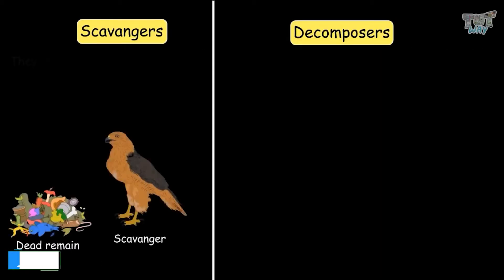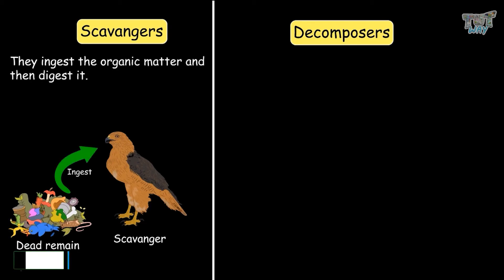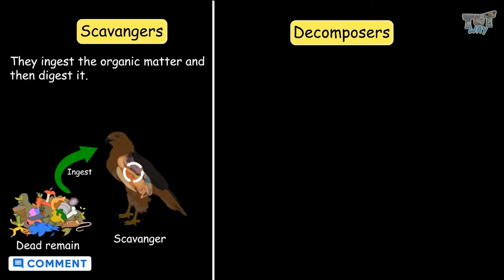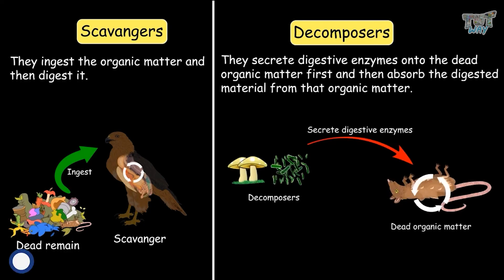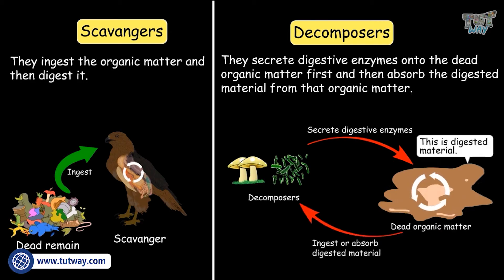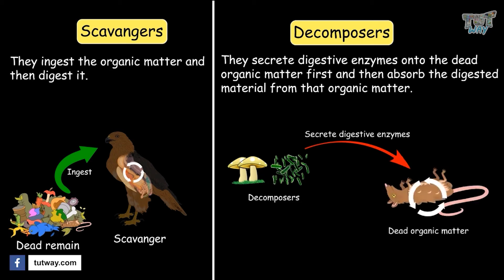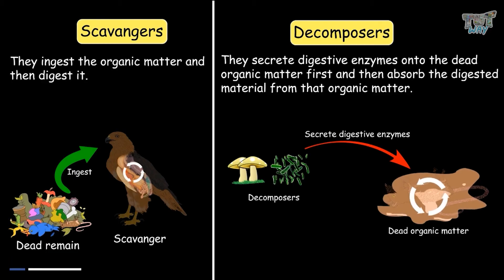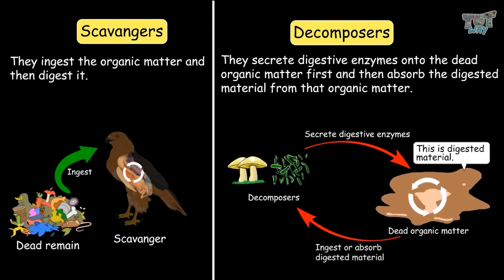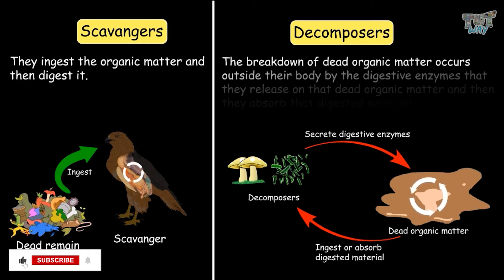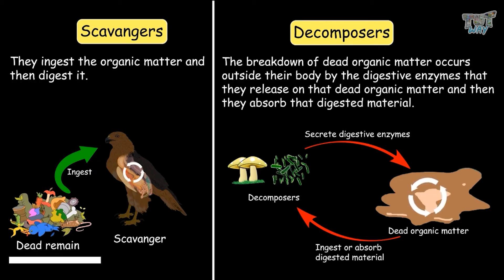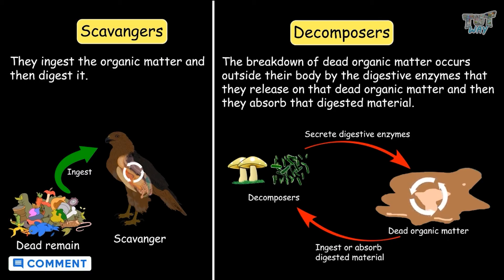The important difference between scavengers and decomposers is that scavengers ingest organic matter and then digest it. But in the case of decomposers, they secrete digestive enzymes onto the dead organic matter first and then absorb the digested material. They secrete digestive enzymes onto the dead organic matter outside their body without ingesting it, and then absorb the digested material which is already outside of their body. So the breakdown of dead organic matter occurs outside their body.